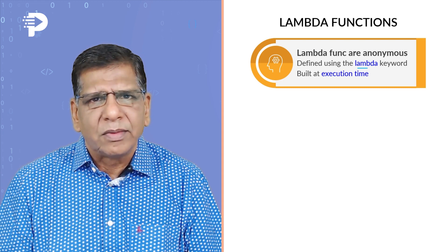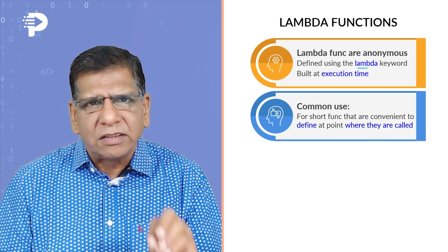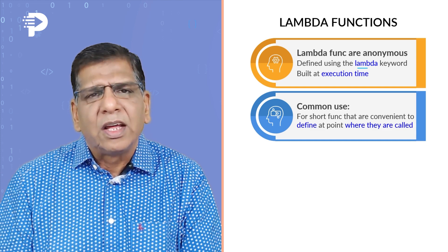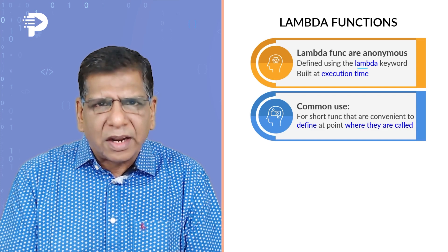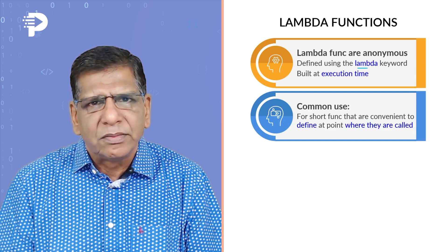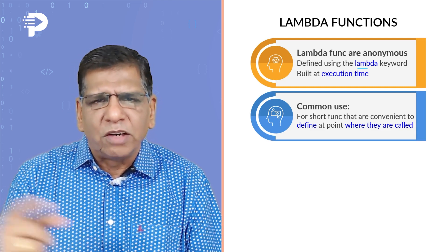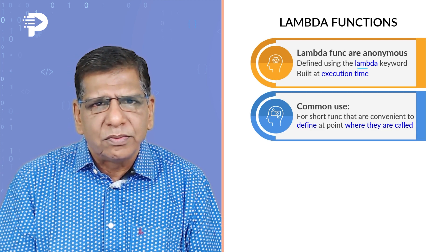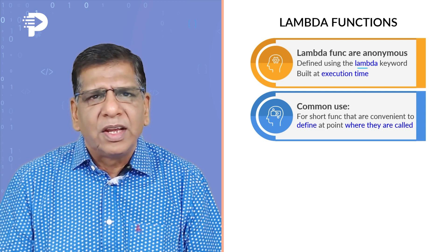A lambda function which does not have a name and which gets constructed at run time is known as a lambda function. There are several situations where very small functions are required. Rather than defining them elsewhere and making a call from some other place, you define them right at the point where you are trying to make the call. That way it becomes convenient to see what is happening, otherwise you are required to shuttle between function definitions to see what a small function is trying to do. When such a situation arises it makes huge sense to use a lambda function.